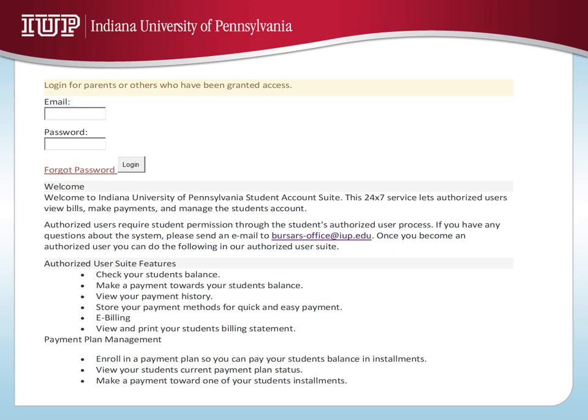To set up an authorized user, select the button that says Add Authorized User and enter the email address for whom you wish to have authorization. After doing so, they will receive an email with a password that will allow them to log in through our website at www.iup.edu/bursar. After the authorized user signs in with their email and password, they will be able to view your account, make payments, and set up installment plans.